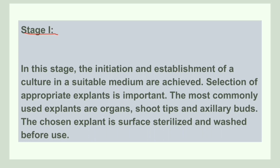Stage 1 is the initiation and establishment of the culture in a suitable medium. An explant — which can be any organ or part of a tissue taken from the plant — is surface sterilized, washed, and then transferred to a nutrient medium. Commonly used explants include organs, shoot tips, and axillary buds. This initial transfer constitutes the primary culture.